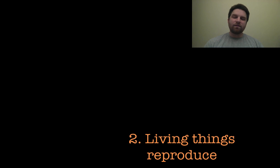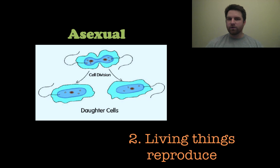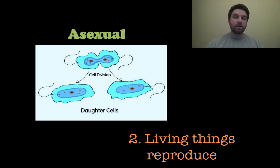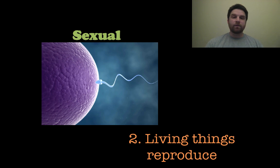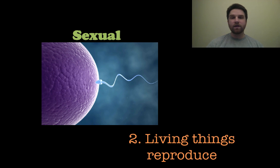Number two, living things reproduce. If it doesn't reproduce, it's not living. There are a couple different types of reproduction: asexual reproduction, where the cell just divides into two pieces, and sexual reproduction, where you have half the DNA from one parent and half from the other parent — they fuse and you get the offspring.